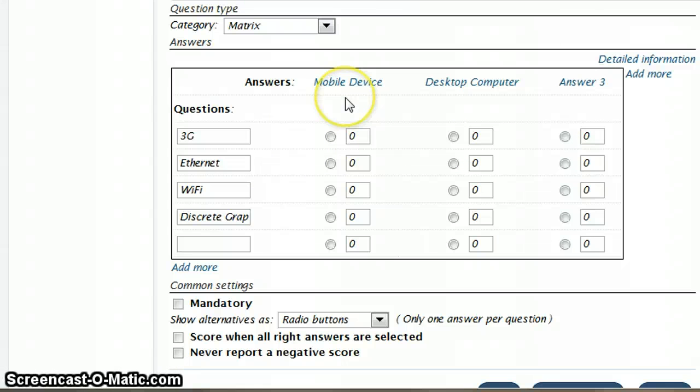OK, so under mobile device, I know that 3G is going to be associated with this, so I click the correct one and give it whatever score I want. So anybody getting this correct will get a score of 1.